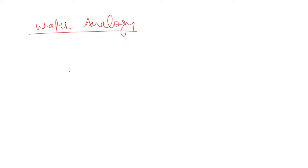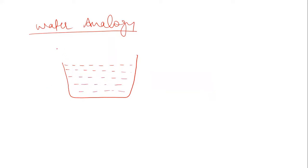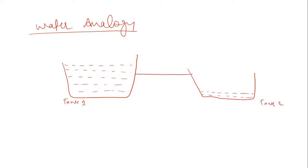Now the water analogy. For example, there is a tank which has some water in it — let us say tank one. And then there is one more tank which has again water, but less water compared to tank one. So this is tank two. Now we have one pipe to which these two tanks are connected. Now what will happen? Some water will start flowing from this tank to this tank.